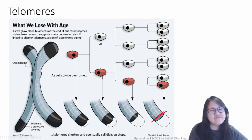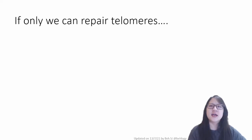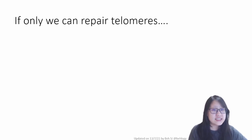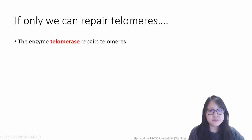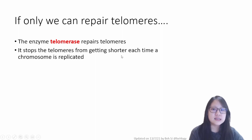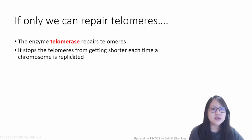Now you may be thinking, what if we can find a way to repair telomeres? Then maybe we can live forever because our cells can divide over and over. Well, the answer is there is actually an enzyme that repairs telomeres — it's in our DNA. Our DNA codes for an enzyme, telomerase, that repairs telomeres. It stops the telomeres from getting shorter each time, and therefore cells can continue to replicate limitlessly again and again because the telomeres don't get shorter.